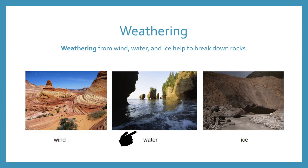The next one is weathering from water. You'll see that the waves are crashing on the rocks, which is causing the rocks to break down and smooth out. The last picture is caused by ice. You can see that it looks like ice has gone like a river through the rocks, causing the rocks to break down and smooth out.